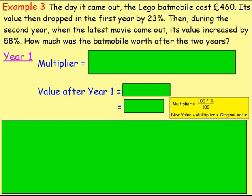Example 3: the day it came out, the Lego Batmobile cost £460. Its value then dropped in the first year by 23%. Then during the second year, when the latest Batman movie came out, its value increased by 58%. How much was the Batmobile worth after these two years? Its value is dropping in the first year and then increasing in the second year, so because it's changing by different percentages, we're going to have to do two calculations. The first thing we need to do is work out the value of the Batmobile after year one — let's use multipliers!